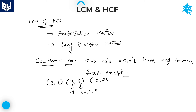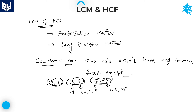Another example with two composite numbers: 8 and 25. Factors of 8 are 1, 2, 4, 8. Factors of 25 are 1, 5, and 25. There is no common factor except one, so 8 and 25 are also co-prime numbers. Whatever the combination — both prime, one prime and one composite, or both composite — the only condition is that the two numbers must not have any common factor except one.